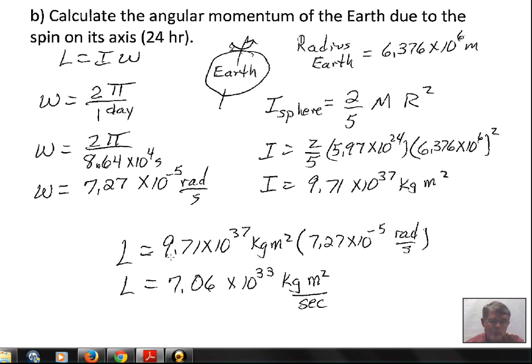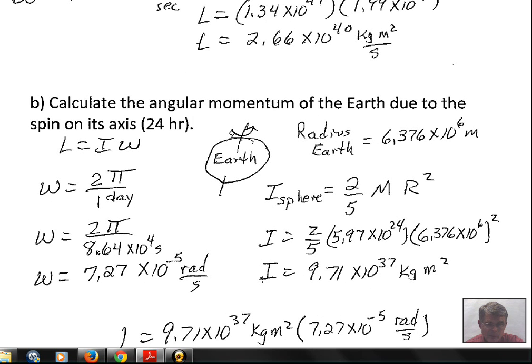And I get 9.7 times 10 to the 37th, the I value, times 7.27 times 10 to the minus 5 radians per second, the omega. And we get 7.07 times 10 to the 33rd kilograms meters squared per second. And you'll notice that this angular momentum is smaller than the angular momentum for the Earth going in its orbit around the Sun.